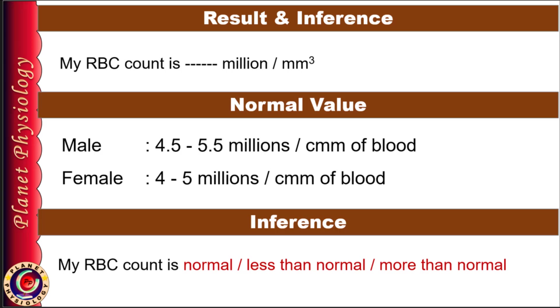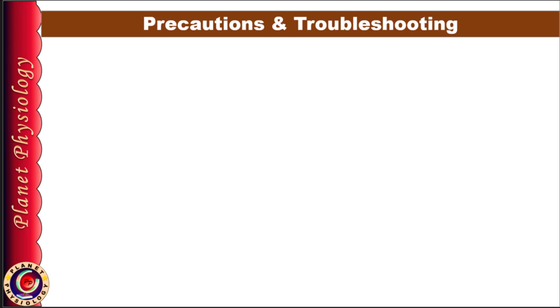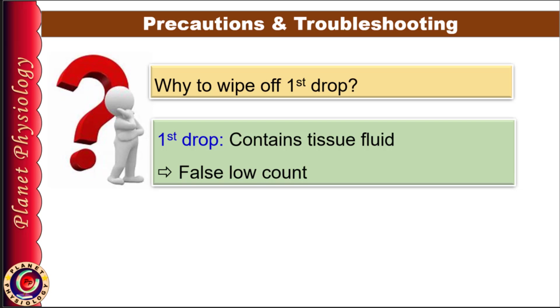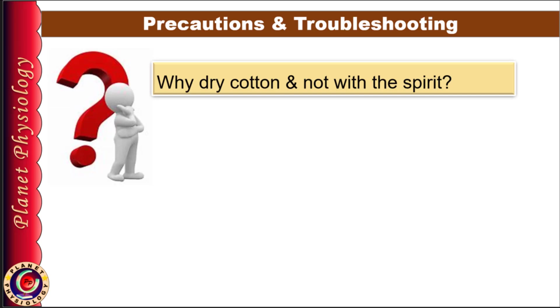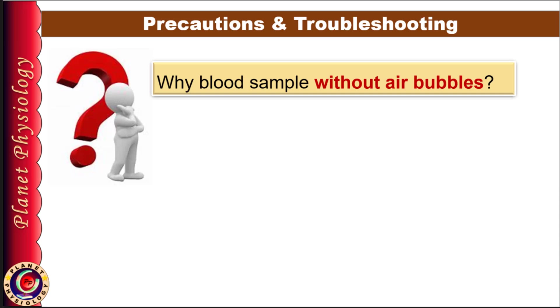Before wrapping up, let's go over some important questions and practical issues you might encounter and key precautions to follow. First, you may think why should I wipe off first drop and waste my blood sample? First drop must be wiped off because it contains tissue fluid which could lead to inaccurate lower RBC count. Always use dry sterile cotton to wipe off the first drop and avoid cotton with spirit. Spirit prevents formation of proper blood drop. Instead blood spreads across the finger making it difficult to collect. Additionally spirit causes hemolysis which would result in false low cell count.